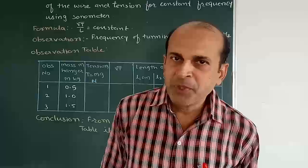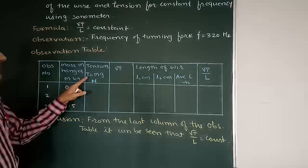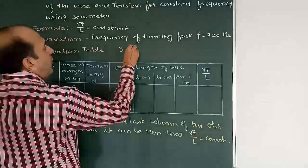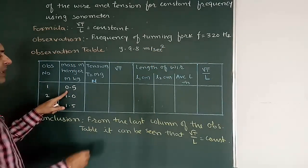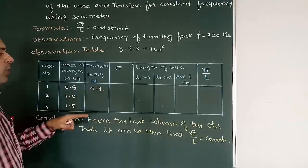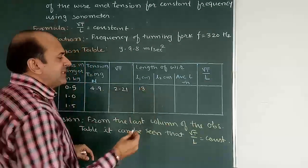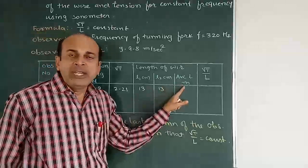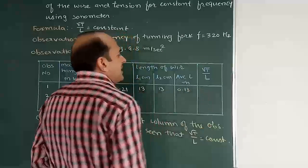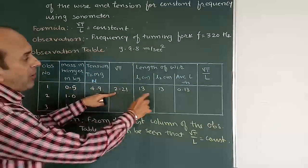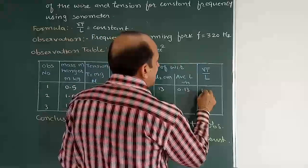Now let me note down the observation table. First, when 0.5 kg was there, the tension produced in the wire is T = Mg, where g = 9.8 m/s². So 0.5 × 9.8 = 4.9 N, and its square root is equal to 2.21. At that time the length was 13 cm, which in meters is 0.13 m. The ratio √T / L = 2.21 / 0.13 = 17.0.